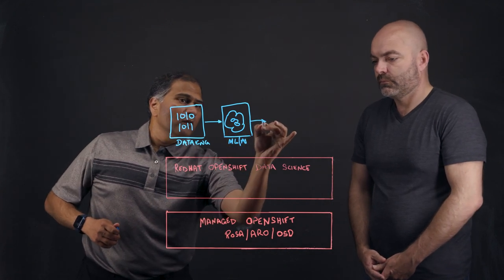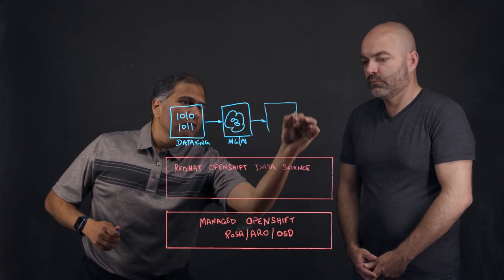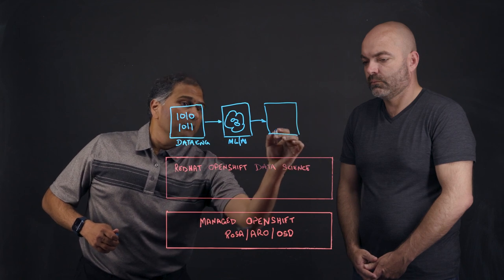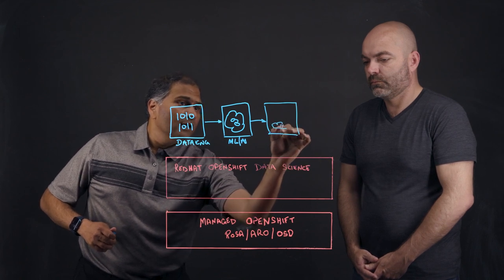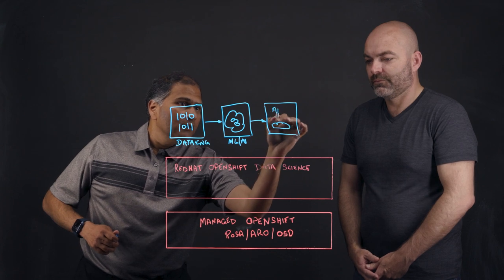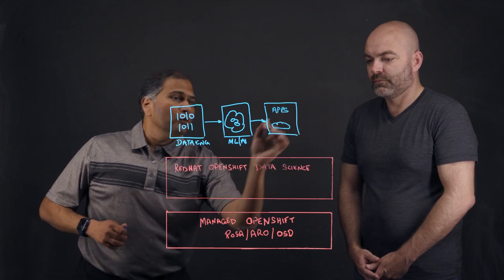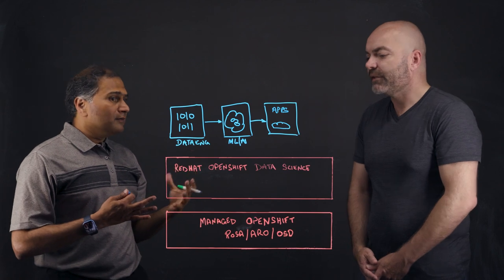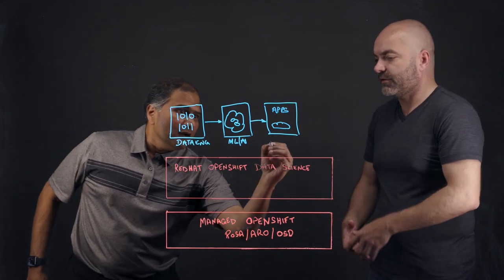And then the data scientists will work with the developers. So in this case, for example, in the fraud detection, they will embed those models into some kind of intelligent app that actually uses the model to make the decisions on the data.